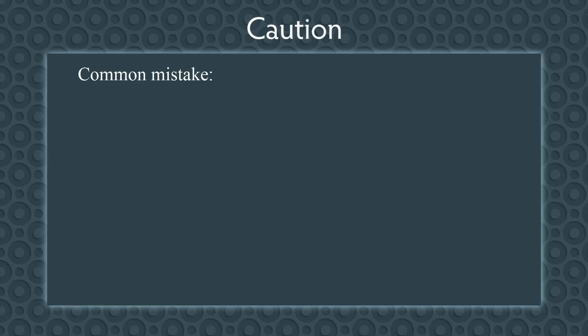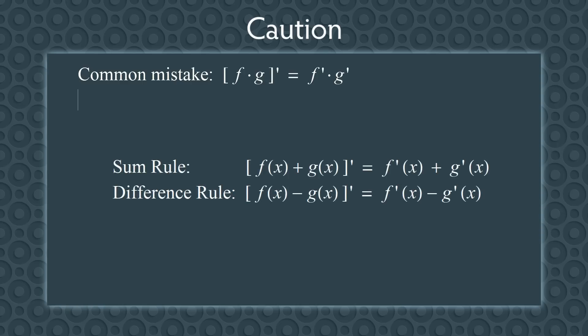Before we see a more complex example, I'd like to take a moment and talk about a common mistake people make with the product rule. People often mistakenly say the derivative of fg equals f′ times g′. You can see where it's tempting: after all, the derivative of a sum is the sum of the derivatives, and the derivative of a difference is the difference of the derivatives. So you might think the derivative of a product is the product of the derivatives. But this pattern doesn't hold.